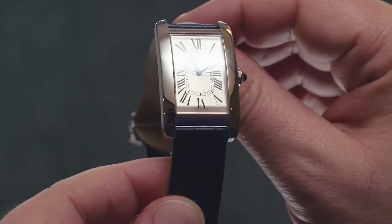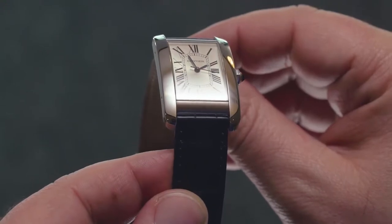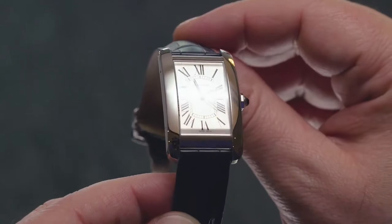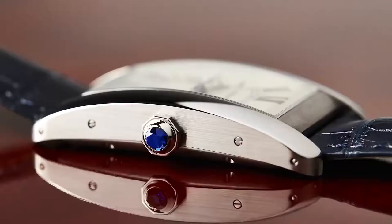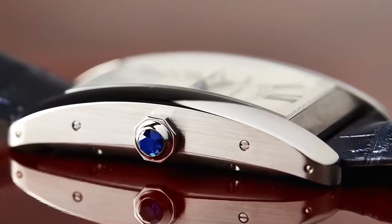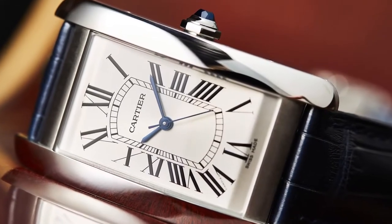Now, the Americane is one of the younger watches in the Tank family, having first been introduced in 1989. It offers, as you can see, a bigger, bolder silhouette than the traditional Tank, and it has a more elongated rectangular case, the style first introduced with the Tank Cintrée.